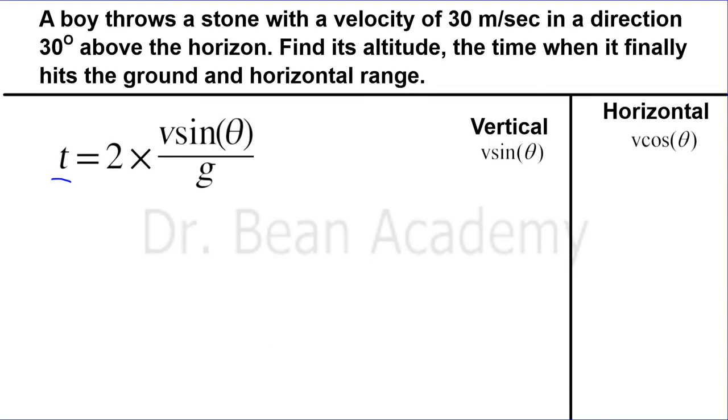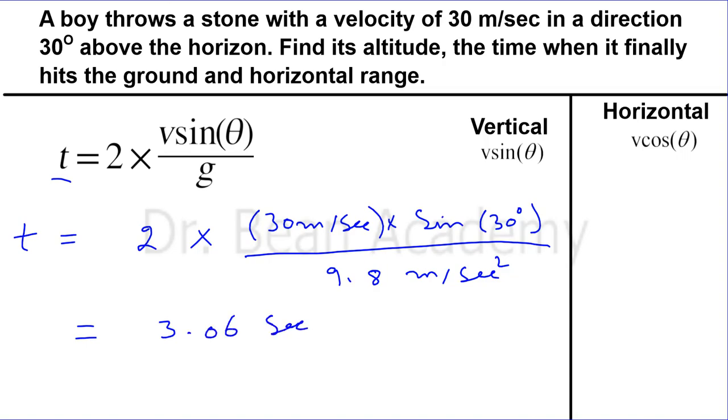Here I have the formula to calculate the total time of flight. I will just plug in the values. T equals 2 multiplied by 30 meters per second multiplied by sine of 30 degrees divided by 9.8 meters per second squared. Once again I can use my calculator to do all of these calculations and it gives me the final result of 3.06 seconds. So this is the total time of flight.